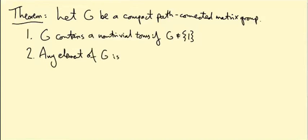Second of all, actually any element of G is contained in a torus. So if there's not just one torus—like we've been looking at these diagonal guys—but there turn out to be many, many tori, and in fact you can find a torus containing any element of G.